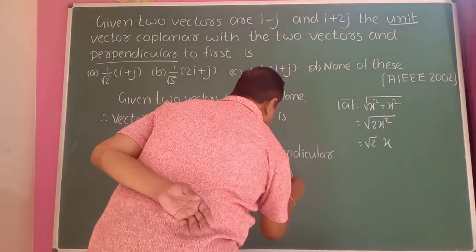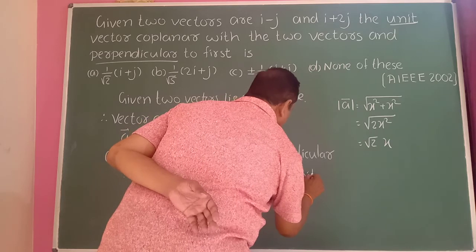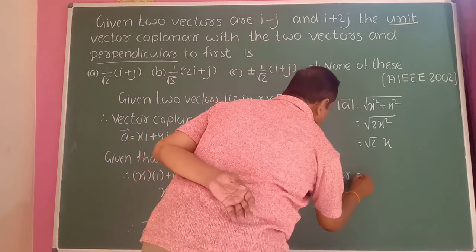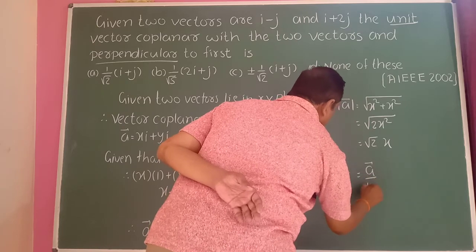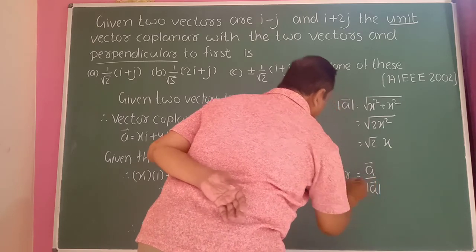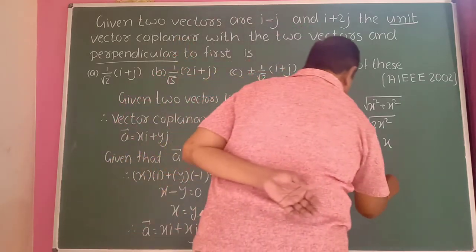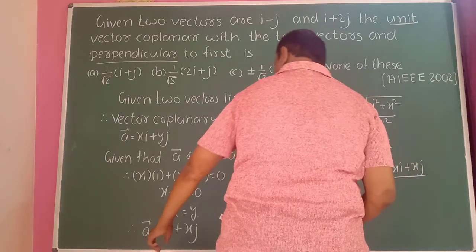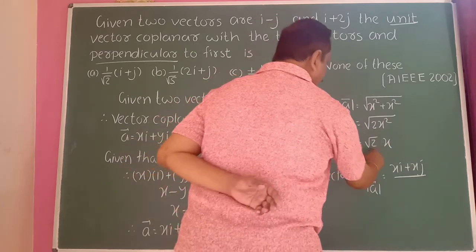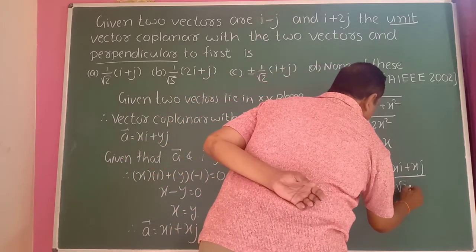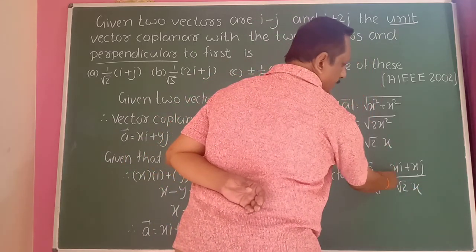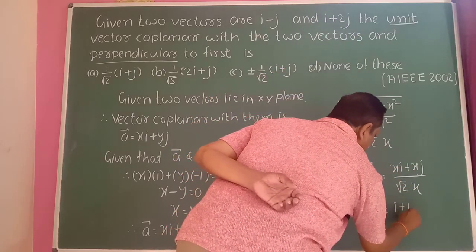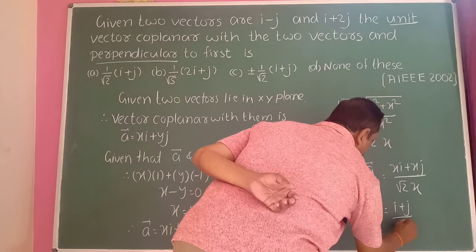The unit vector equals a-bar divided by modulus of a-bar. So a-bar equals xi plus xj, divided by root 2 into x. Taking x as a common factor, x cancels, giving i plus j divided by root 2.